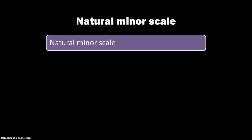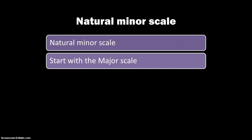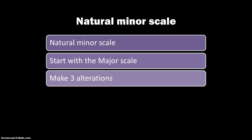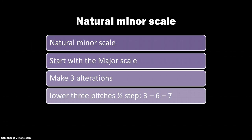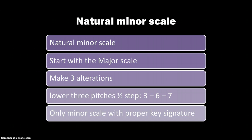This first one is called the natural minor scale. This is the only one with a proper key signature, and we're going to start with the major scale and make three alterations. Those alterations mean we're going to be lowering three of the scale degrees by a half step. The three degrees are the third, sixth, and seventh note of the major scale.